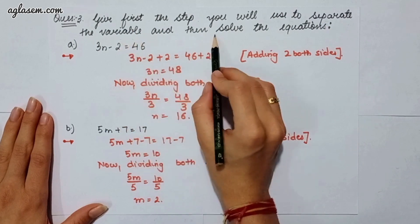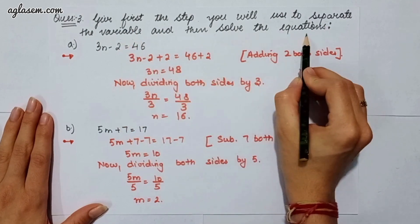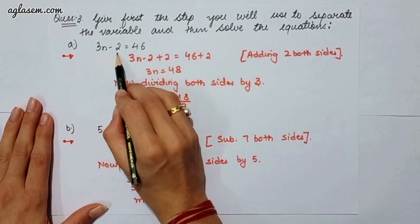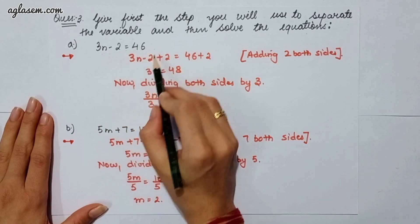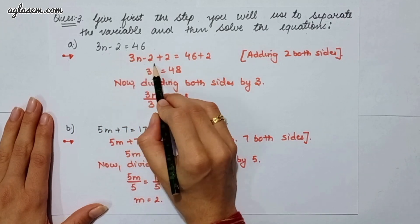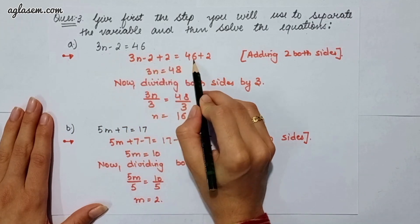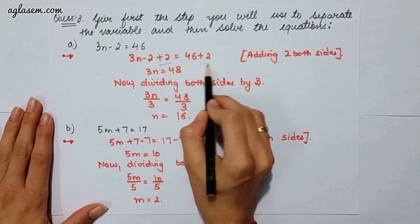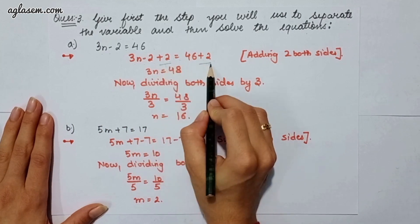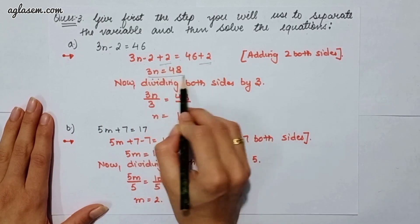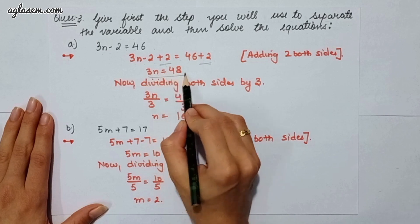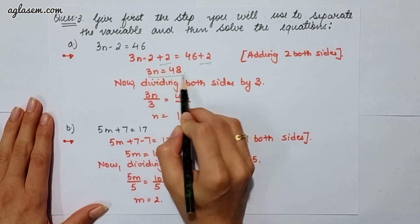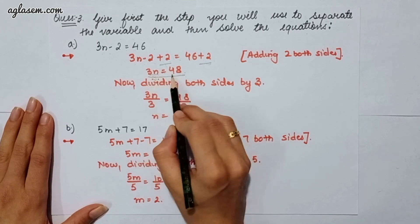The first part says 3n minus 2 is equal to 46. So 3n minus 2 plus 2 is equal to 46 plus 2. Here we have added 2 on both sides, therefore 3n is equal to 48. Now we have to divide both sides by 3.